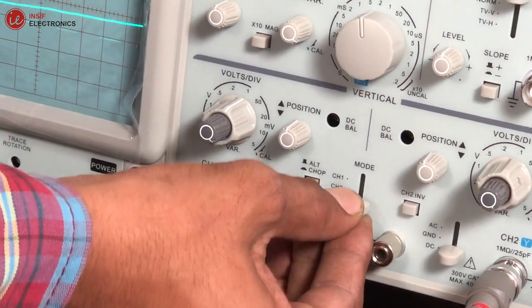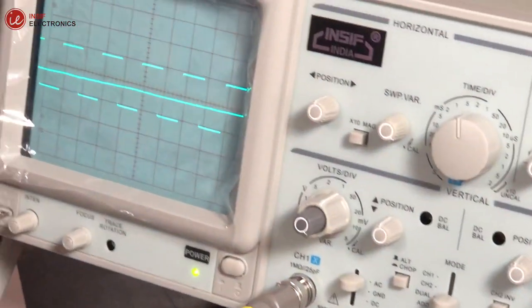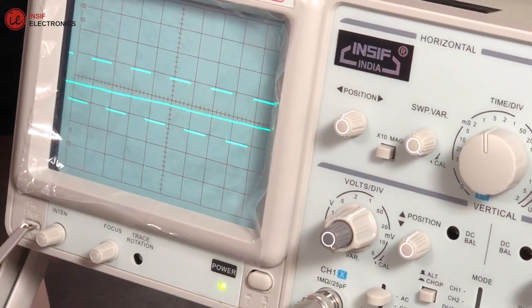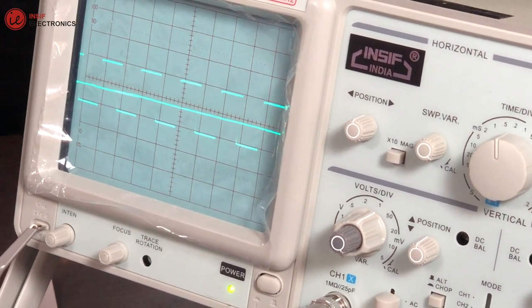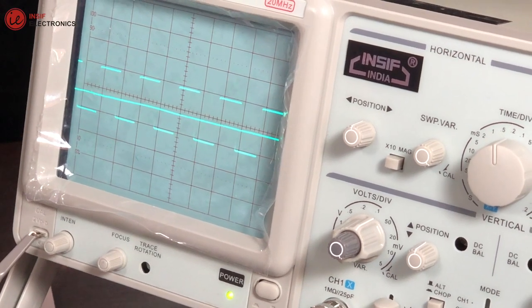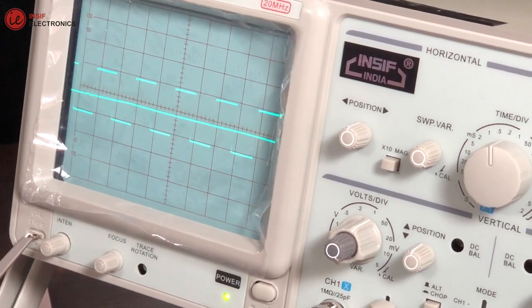Now, after selecting this mode, we can see two different signals are observed on the CRO display, one is from channel 1, and another is from channel 2 which is connected to calibration signal.